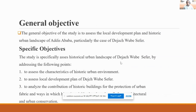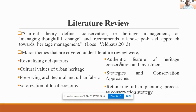Chapter two is more about literature review. I quote Luis Valva's 2013 article, which suggests current theory defines conservation, urban renewal, and heritage in general as managing thoughtful change. The city is like a Dubai-like type of approach, but this is not working because it destabilizes the genius loci of the place. Matters covered under literature review were revitalizing old culture, cultural values of urban heritage, preserving architectural and urban fabric, and valorization of local economy.